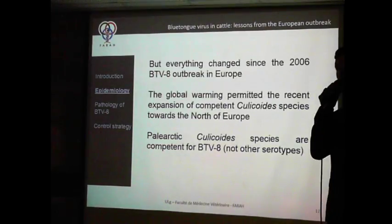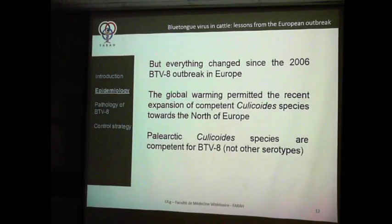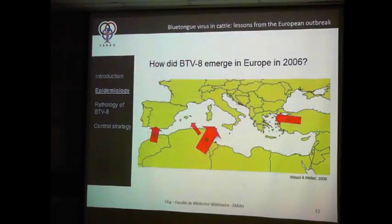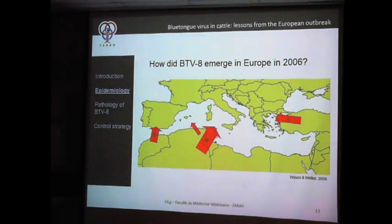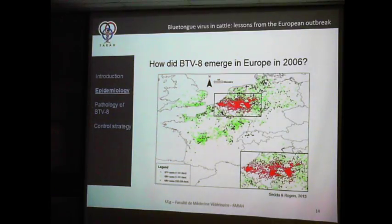Additionally, the Palaearctic Culicoides present in northern Europe were shown to be competent for this specific BTV-8 serotype, but not for all BTV serotypes. At first we thought BTV-8 emerged through spread from the south via Spain, Sardinia and Corsica, or Greece. But actually, very similarly to Schmallenberg, it emerged close to the border between Belgium and Germany.